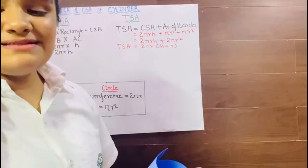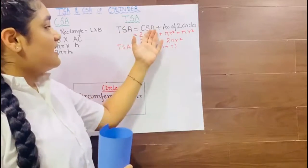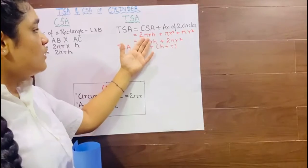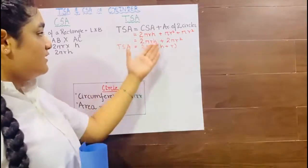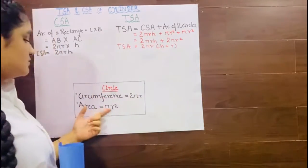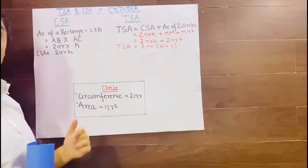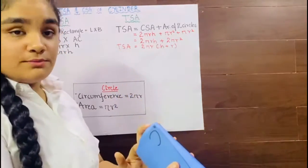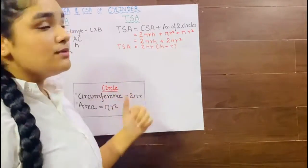TSA is the CSA and the area of the two circles. So here I have written the formula of CSA that is 2πrH. Area of one circle we know is πr². So for two circles at the top and at the bottom, it will be 2πr².